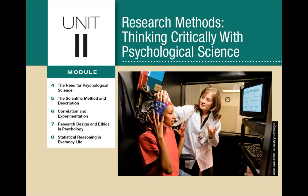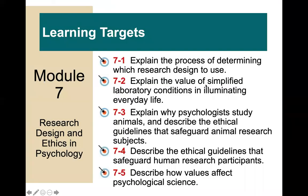Welcome back to module number seven, Research Design and Ethics in Psychology. It's quite a short module, so we should get through this rather quickly. The learning targets are: explaining the process of determining which research design to use, explaining the value of simplified laboratory conditions, explaining why psychologists study animals and the ethical guidelines for animal research subjects, describing ethical guidelines for human participants, and understanding how the values of a scientist affect psychological science.